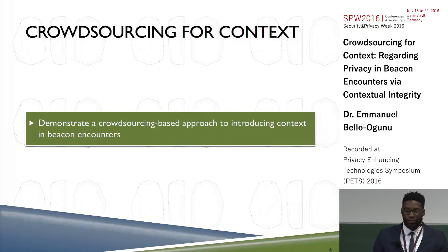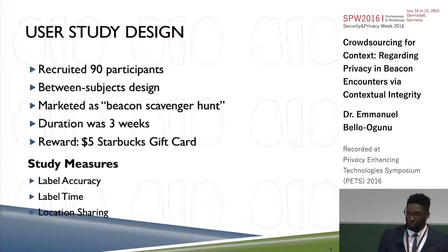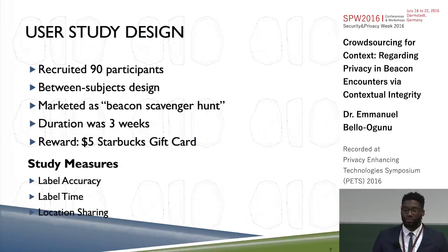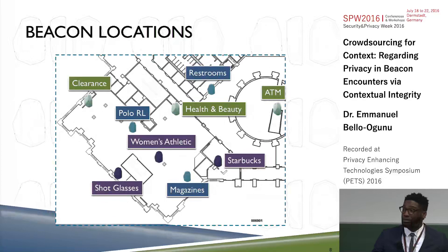I came up with a user study in which I wanted to demonstrate a crowdsourcing-based approach to introducing context to beacon encounters. My hypothesis was that crowdsourcing is an accurate and efficient approach to providing users with context during these beacon encounters. For this study, I recruited 90 participants from my college campus. I structured this as a between-subjects design and marketed the application as a scavenger hunt, having participants walk around our bookstore to label nine beacons with a category label and a privacy label over a three-week span. The reward was a $5 Starbucks gift card. The measures I was interested in include label accuracy, label time, and the actual location sharing participants indicated they'd be willing to do. This is a brief map of our bookstore floor plan along with the locations of the beacons.